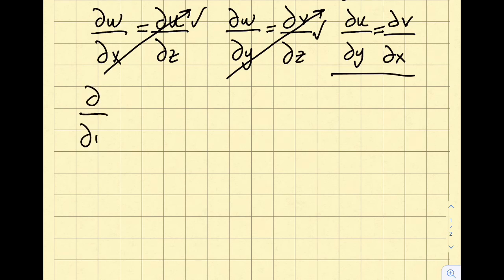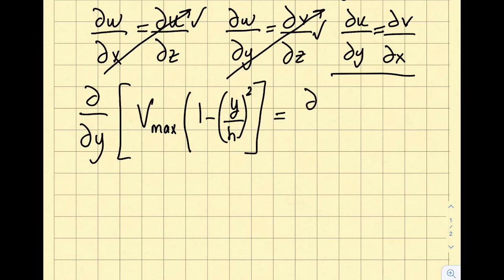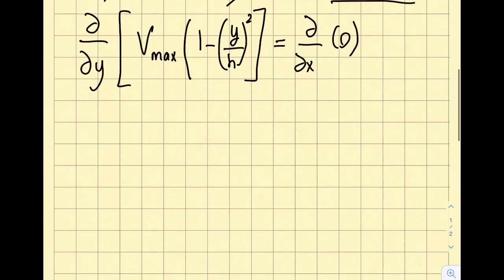Let's go ahead and insert del/del y of u, and u is V max times 1 minus y over h squared, equals del/del x of v, which is zero. So the right-hand side becomes zero. Let's look at the left-hand side. I'm taking the partial of this bracket with respect to y.